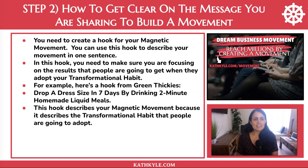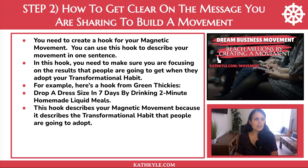The first thing you need to do is create a hook for your magnetic movement — a single sentence that describes your movement. Focus on the results people are going to get when they adopt your transformational habit. For example, here is a hook from Green Thickies: 'Drop a dress size in seven days by drinking two-minute homemade liquid meals.' In this hook, people know exactly what measurable results they can expect, in what timeframe, how much time investment it takes, and what they will be doing. This hook describes the transformational habit and, once crafted, your message will start to spread like wildfire.